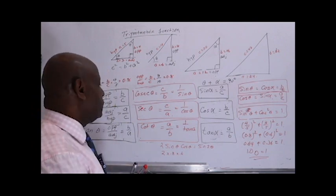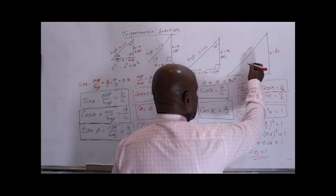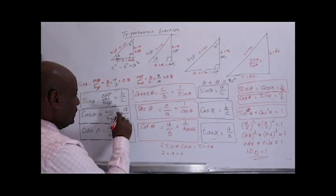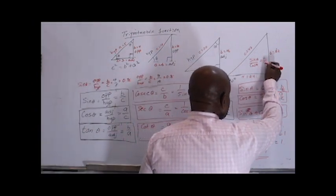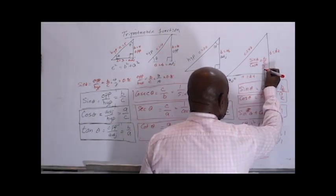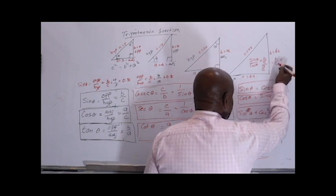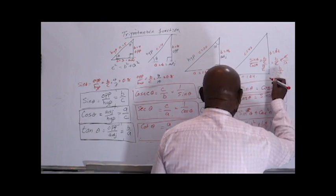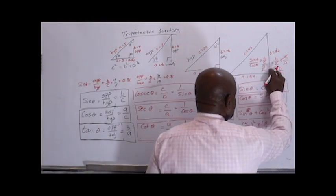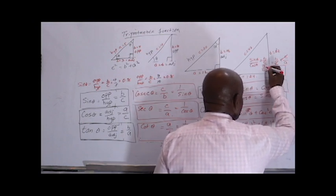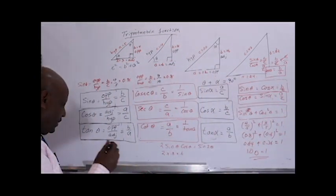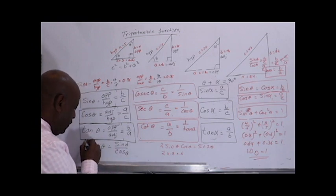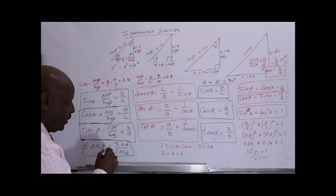Let me give you one more example. If you divide sin theta by cos theta, what do you get? Sin theta means B over C, and cos theta is A over C. So that is B over C times the reciprocal, C over A. C cancels C and we get B over A. B over A means tan theta. Therefore, tan theta equals sin theta over cos theta.